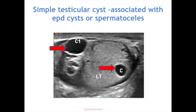Simple testicular cysts are also seen associated with epididymal cysts or spermatoceles. This transverse scan of the testis and epididymis shows a small intratesticular cyst indicated by a red arrow, and another cystic lesion C1 shown by a red arrow is an extratesticular cyst of the epididymis.